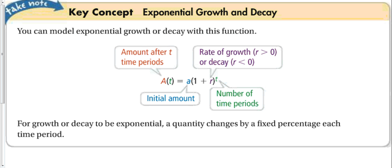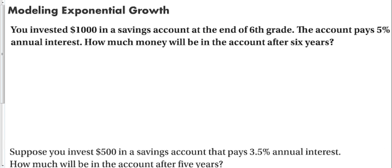One of the most popular ways we use exponential growth and decay is with this function: A(t) equals a times (1 plus r) to the t power. Where the A means the amount after t periods, t is the number of time periods, a is my initial amount, and r is my rate of growth or rate of decay. For growth or decay to be exponential, the quantity changes by a fixed percentage each time period. This is most commonly found in problems with money, compounded interest.